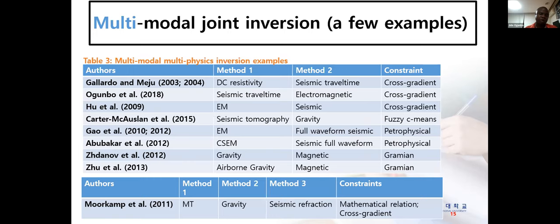Gallardo and Meju have popularized the use of cross-gradient, with most of their publications dealing with DC resistivity as the first method and seismic travel time as the second, expecting resistivity and velocity. Ogunbo et al. used seismic travel time and electromagnetic methods, imposing cross-gradient structural constraints. There's also EM and seismic with cross-gradient by others (2009), seismic and gravity by Katayanagi et al. 2015. Gao et al. used EM and full waveform seismic with petrophysical constraints. Gallardo et al. from Utah do more gramian constraint work using gravity and magnetic data. More-Camp et al. 2011 used three methods — MT, gravity, and seismic refraction — comparing mathematical direct relations and cross-gradient constraints.